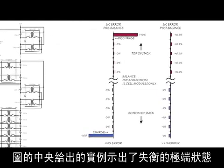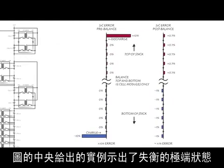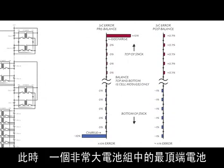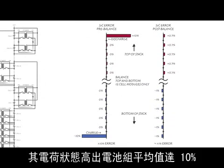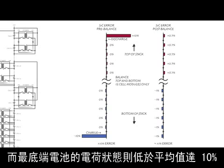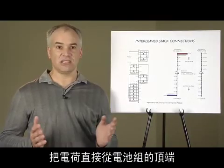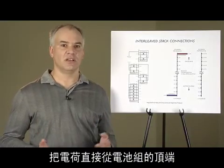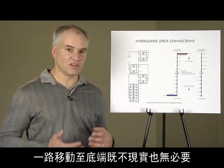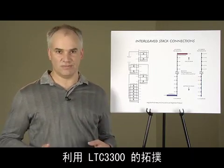The example shown here in the center illustrates an extreme state of imbalance, in which the topmost cell in a very large stack has a state of charge 10% above the stack average, and the bottommost cell has a state of charge 10% below. It is neither practical nor necessary to move charge directly from the top of the stack all the way to the bottom.